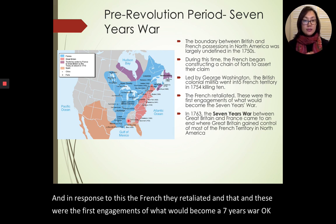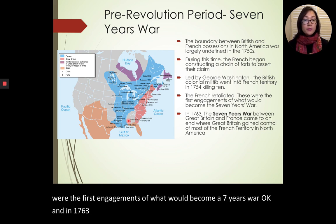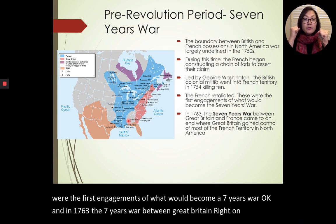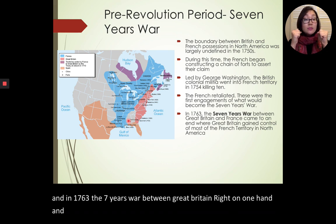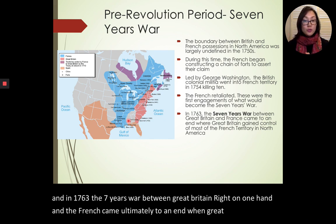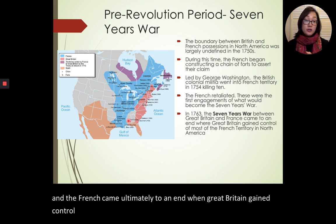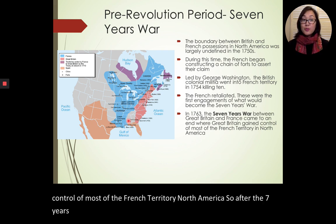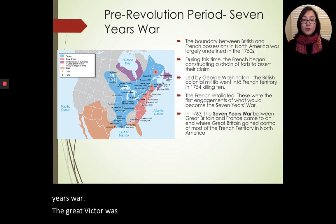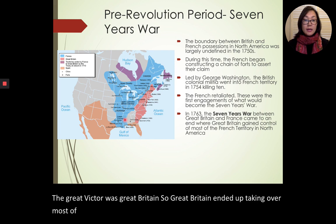In response, the French retaliated, and these were the first engagements of what would become the Seven Years' War. In 1763, the Seven Years' War between Great Britain and the French came ultimately to an end when Great Britain gained control of most of the French territory in North America. After the Seven Years' War, the great victor was Great Britain, which ended up taking over most of the French territory in North America.